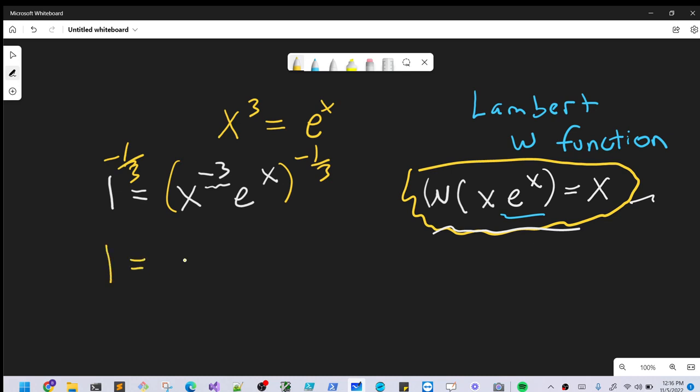1 to the -1/3 is just going to be 1. Then we'll separate out the right side. We'll write our x⁻³ to the 1/3, and then we'll have our eˣ to the -1/3.